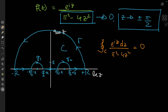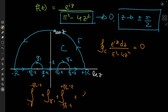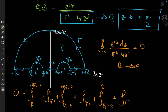Everything is holomorphic on and inside the contour, and the contour doesn't enclose any poles, so there are no residues to calculate and the integral equals 0. But this one integral over C is made up of quite a few integrals: from −R to −π/2 − ε, then over γ₁, then from −π/2 + ε to π/2 − ε, then over γ₂, then from π/2 + ε to R, then over Γ. The sum of all of these equals 0, and we're interested in the limiting cases R → ∞ and ε → 0.